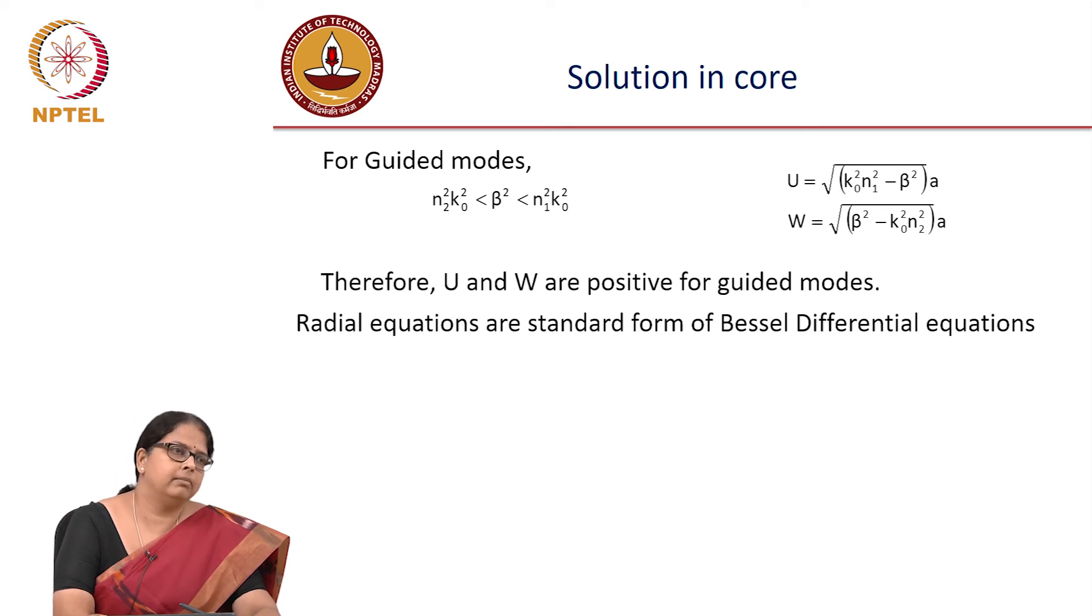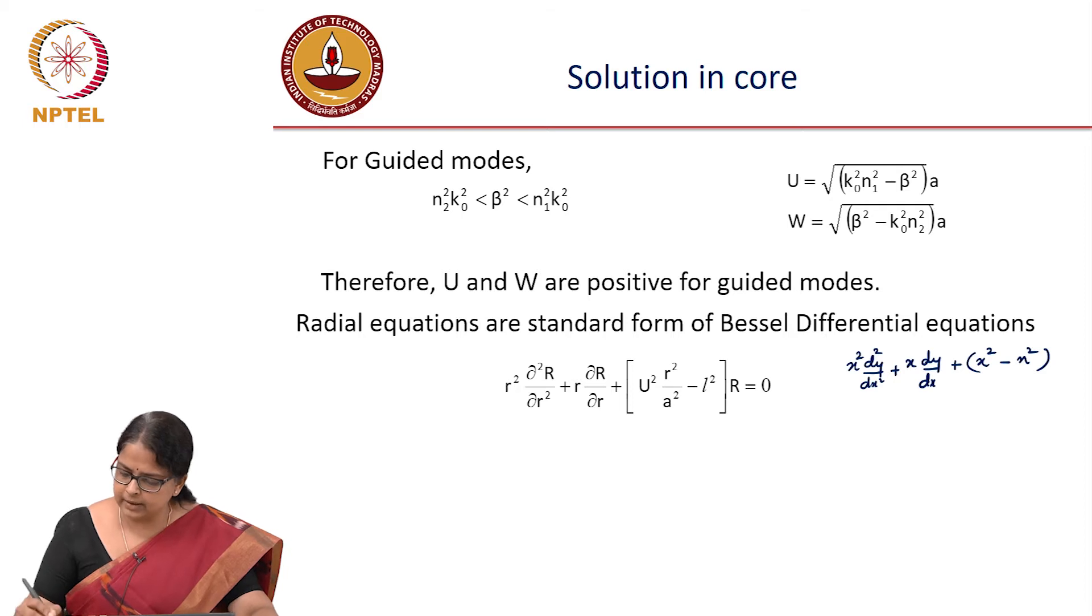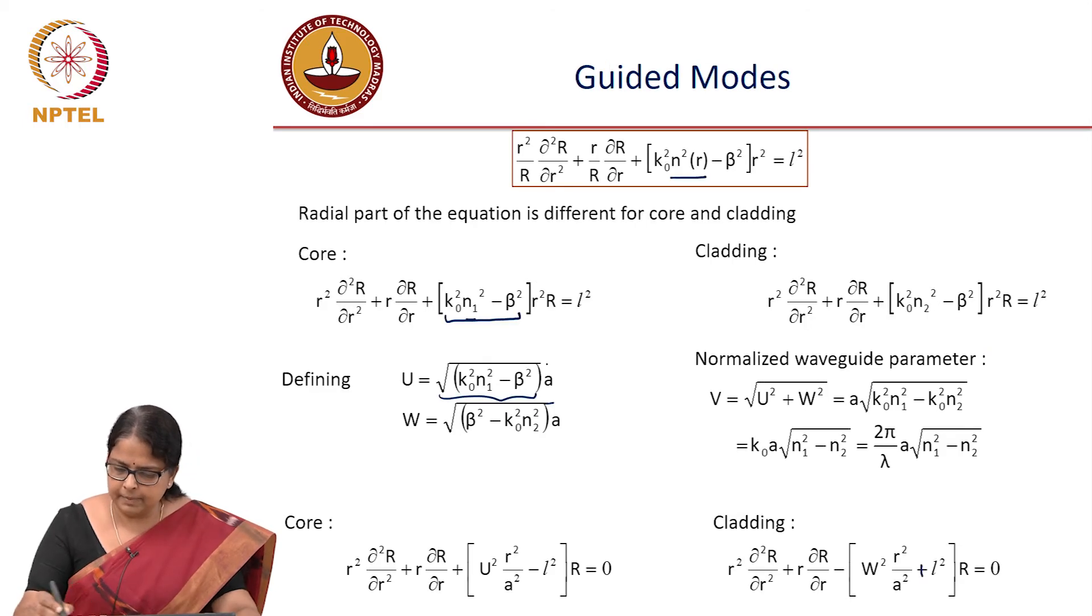The radial equations then form what are known as Bessel differential equations. And the Bessel differential equation, the general form of Bessel differential equation is x square d square y by dx square plus x dy by dx plus x square minus n square times, actually this r, if you multiply everything with r, this should have an r here.